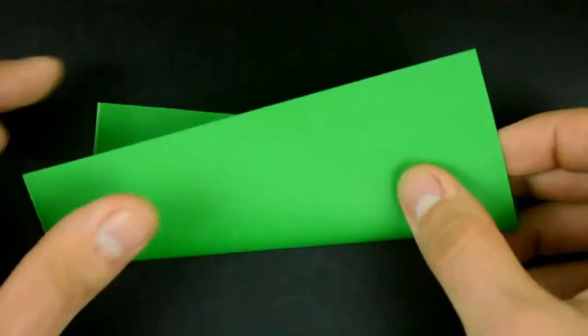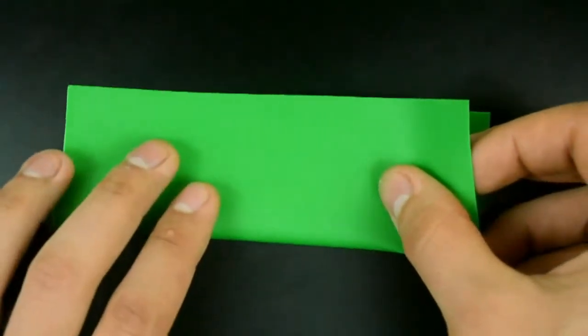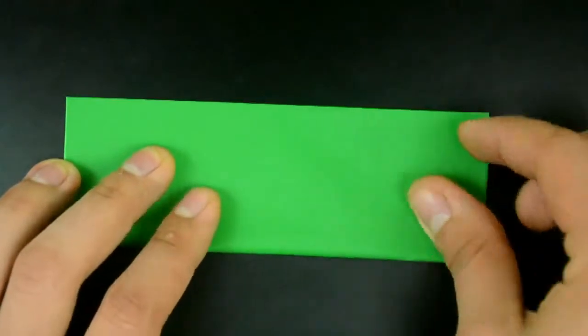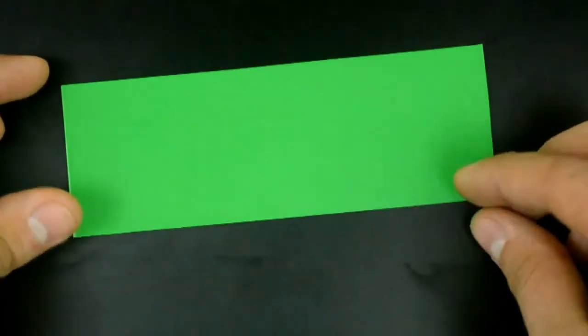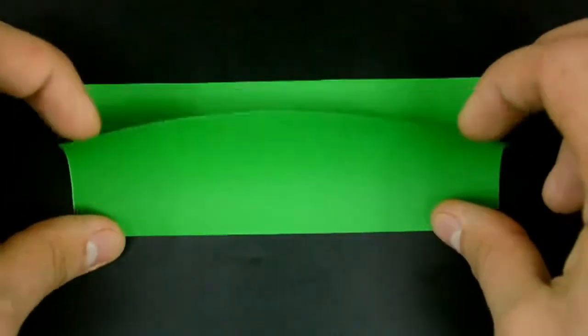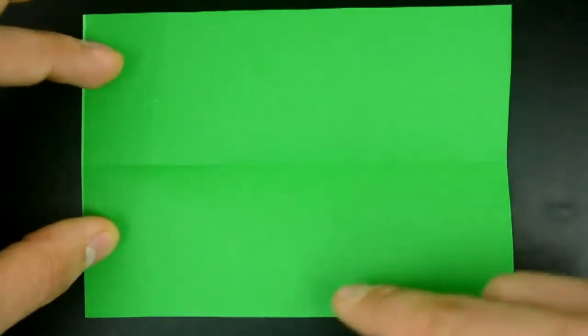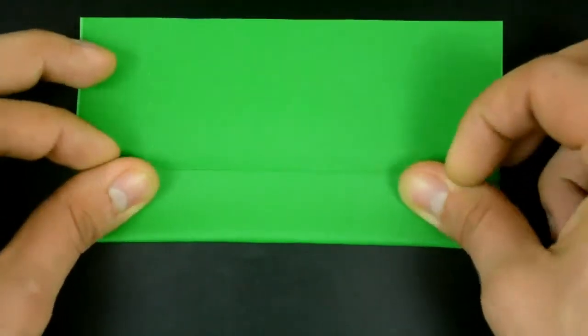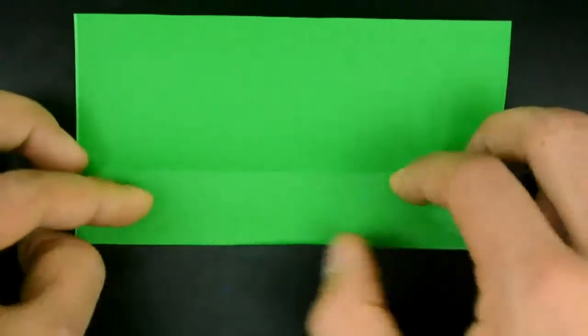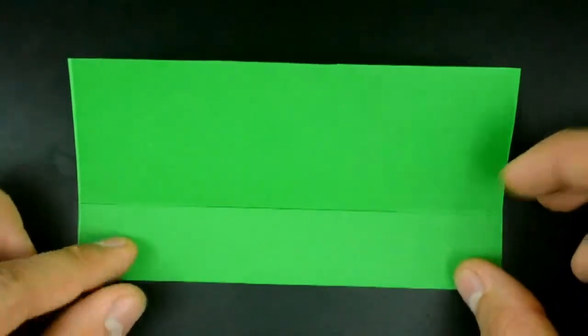First, let's fold in half. The bottom edge to the top. Now undo and fold both sides to the middle. First, the bottom edge, and then the top.